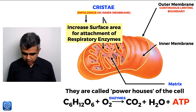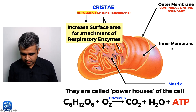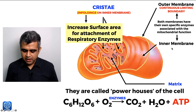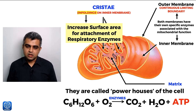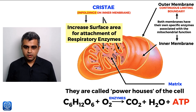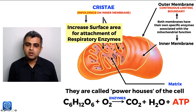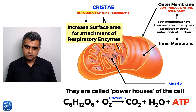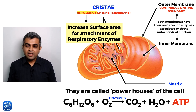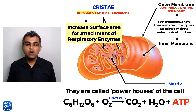Both the outer membrane and the inner membrane of the mitochondria have their own specific enzymes associated with mitochondrial function — the main function being production of ATP. The inner membrane has lots of enzymes because its foldings — the cristae — increase the surface area to which those enzymes can be attached.